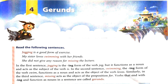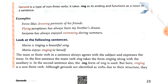Verbs that end with -ing and function as a noun in a sentence are called gerunds. So, what is a gerund? Verbs that end with -ing and function as nouns in a sentence are called gerunds. The definition is: a gerund is a type of non-finite verb. It takes -ing as its ending and functions as a noun in a sentence.